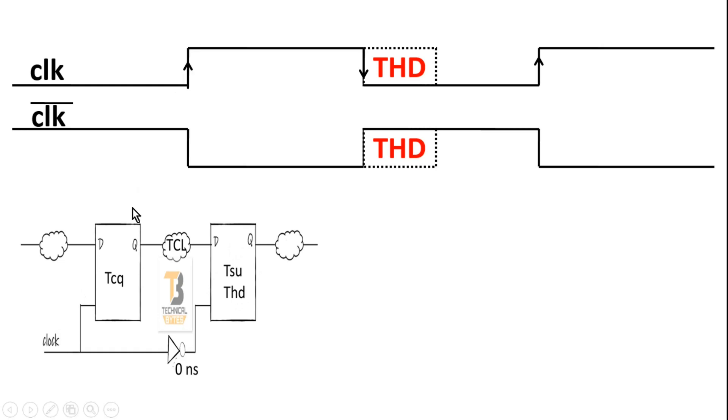On the positive edge of the clock, flip-flop 1 throws data. And on the negative edge of the clock, flip-flop 2 receives data. But flip-flop 2 requires hold time. What is hold time? Hold time is the minimum time after the active edge of the clock. For that time window, the data must be stable. And this is the hold time window for the second flip-flop which comes after the negative edge of the clock.